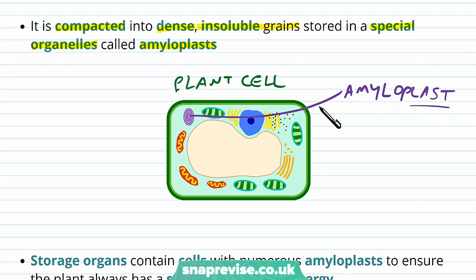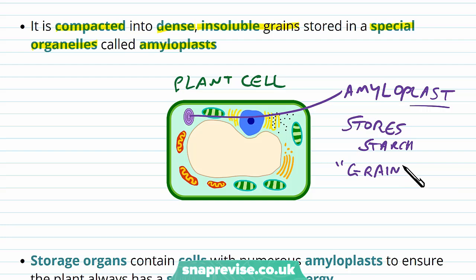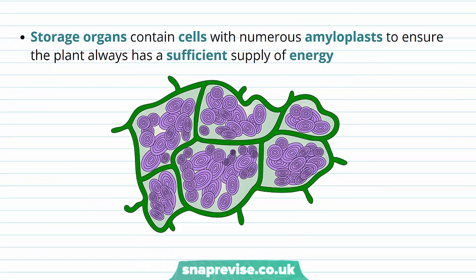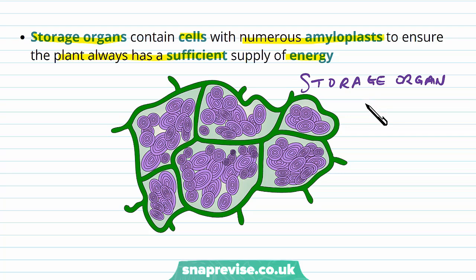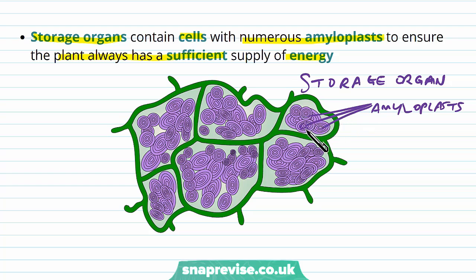Amyloplasts are similar to chloroplasts in their name, but they store starch — sometimes referred to as a grain or starch grain. Storage organs, like underground potatoes, contain cells with lots of amyloplasts to ensure that the plant always has a sufficient supply of energy. If you look into a storage organ, you'll see numerous amyloplasts in each cell, and inside these amyloplasts you'll find lots of molecules making up the starch.